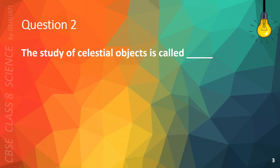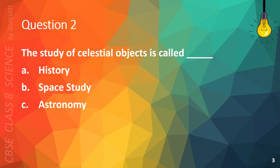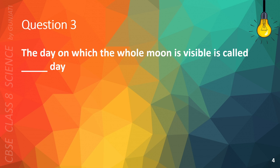Question 2. The study of celestial objects is called A. History, B. Space Study, C. Astronomy, or D. Astrology. The correct answer is C. Astronomy.